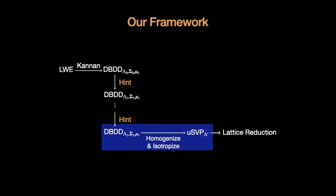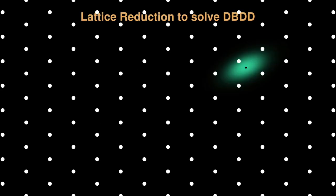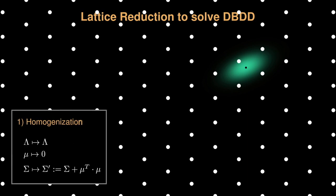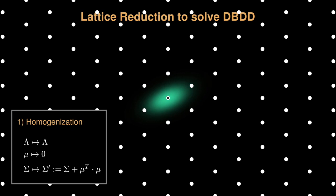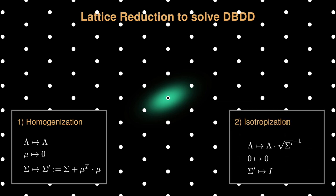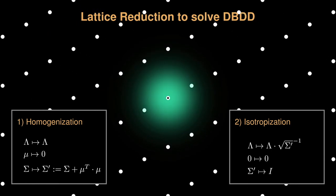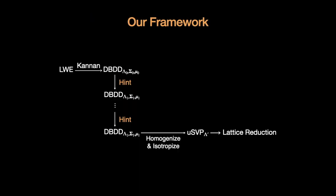Let us see the last step geometrically. Assume that we have our DBDD instance and we want to apply lattice reduction. First, we will homogenize the instance with the following equations. Then, we will isotropize the instance by distorting the lattice to end up with a circular distribution. Now, the issue boils down to the middle part, which is the heart of our work. My colleague Eugene will present you the geometric intuitions of these parts.